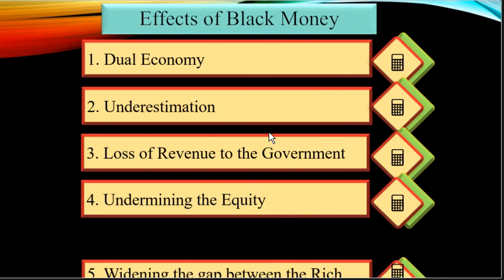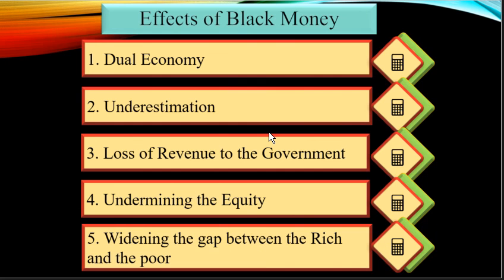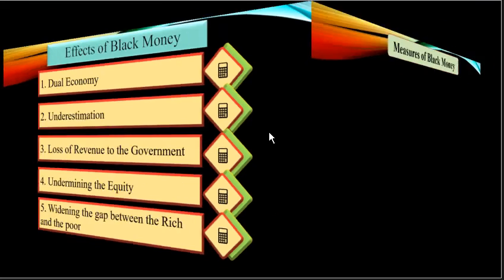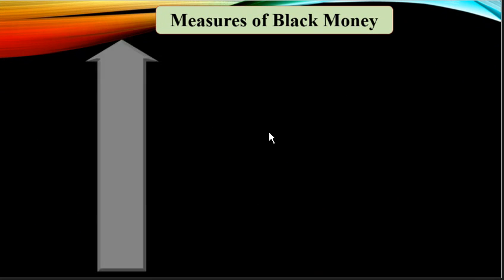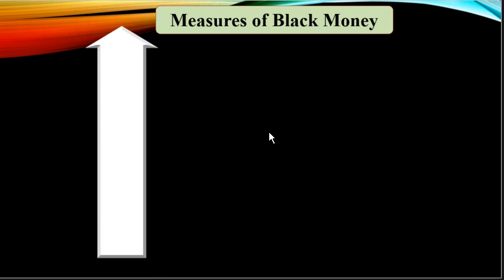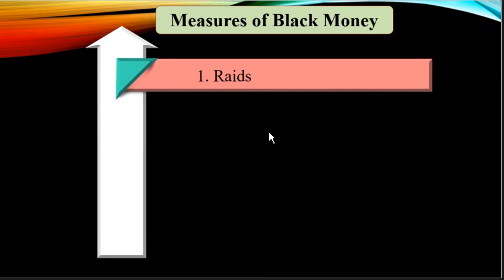The last effect of black money is widening the gap between the rich and the poor. Growth of black money causes increased regressive distribution of income in society — when black money grows faster, the rich become richer and the poor become poorer. Now let us look at the measures or solutions for black money.